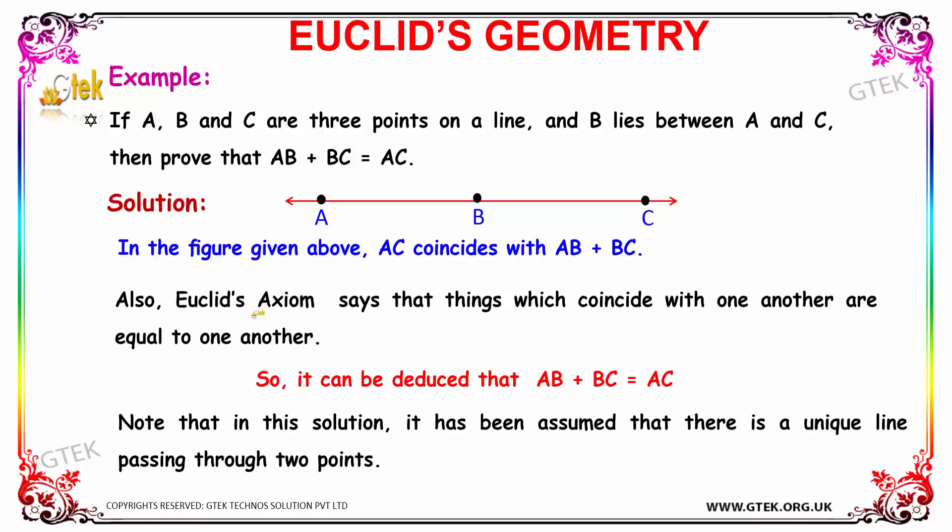Also, Euclid's axiom says that things which coincide with one another are equal to one another. As per the Euclid's axiom statement, it can be deduced that AB plus BC equals AC.